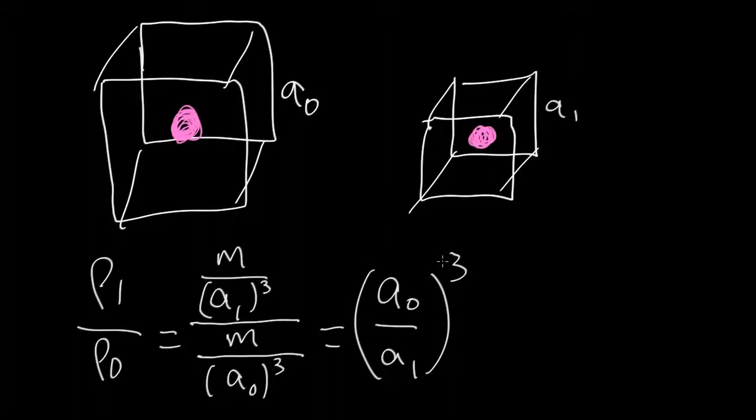In other words, the density of the universe evolves inversely with the cube of the scale factor.